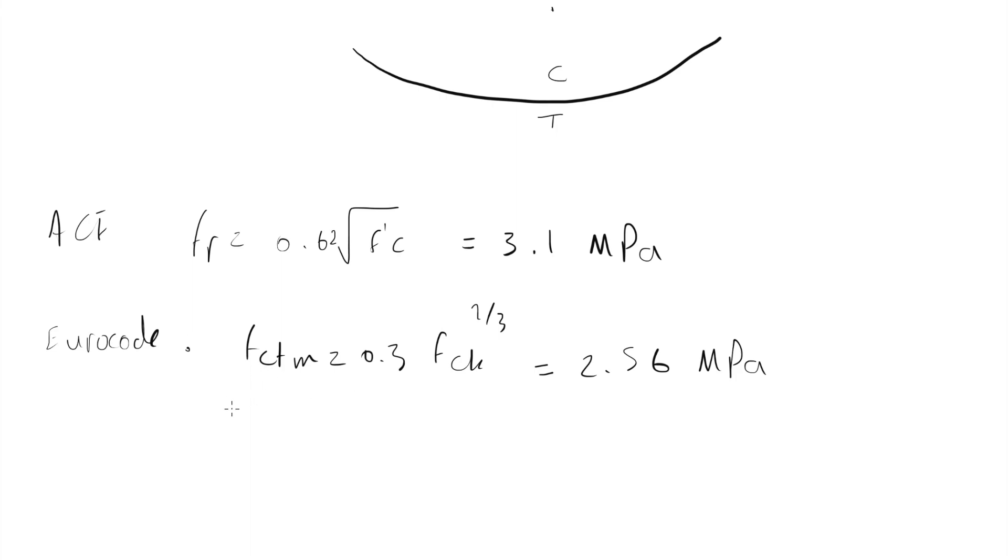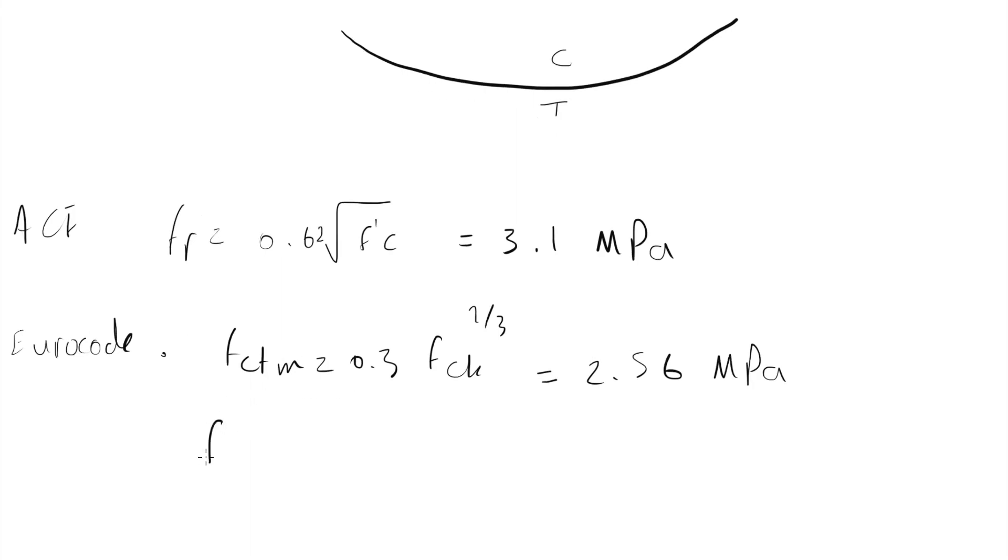Now this is the tensile strength of the concrete, but to find the tensile strength of concrete in bending, they have also provided another equation which says FCTM FL equals to maximum value of 1.6 minus height of the beam divided by 1,000 multiplied by FCTM or FCTM. Which one is higher?